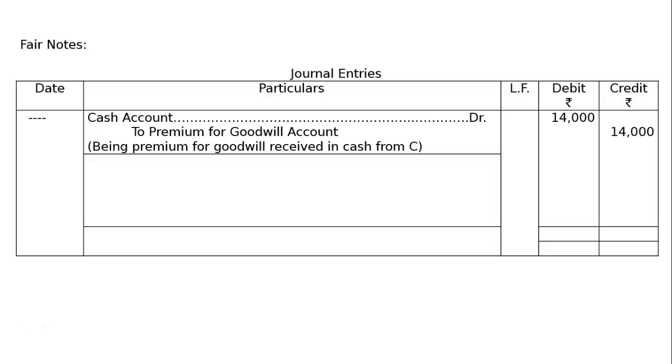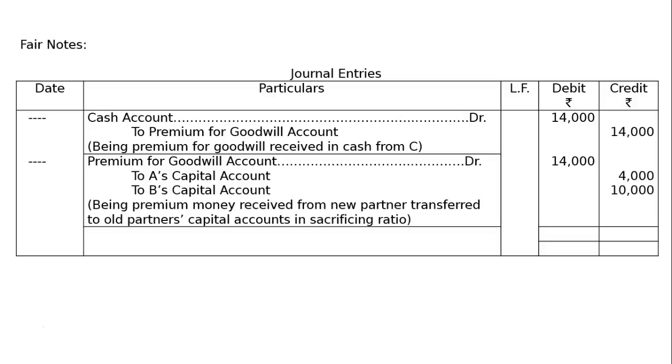Next, premium for goodwill account debited 14,000 to A's capital account Rs 4,000, to B's capital account Rs 10,000. It is transferred in sacrificing ratio. Being premium money received from new partner C transferred to old partner's capital accounts in sacrificing ratio, 2 is to 5.